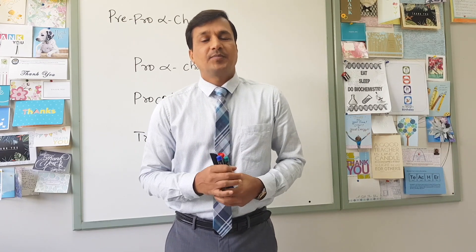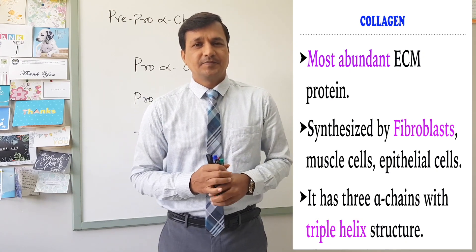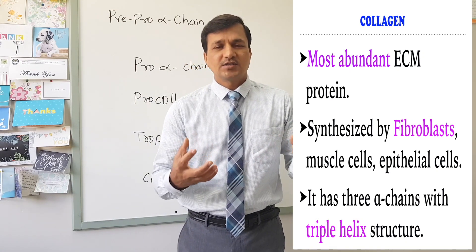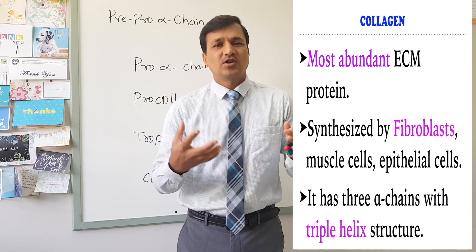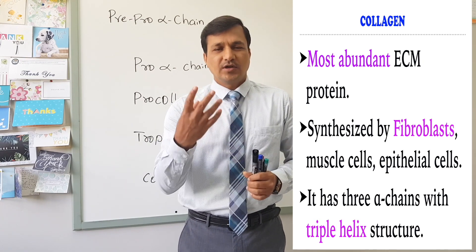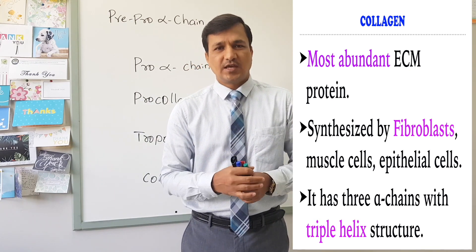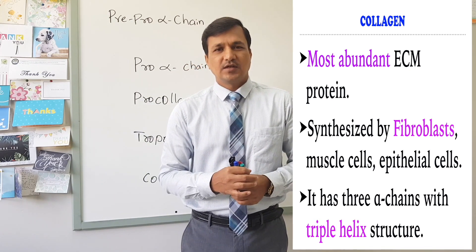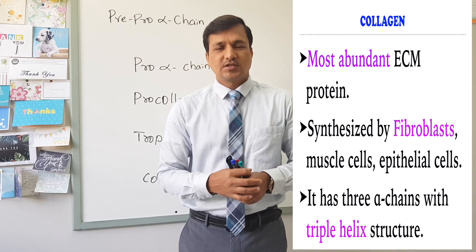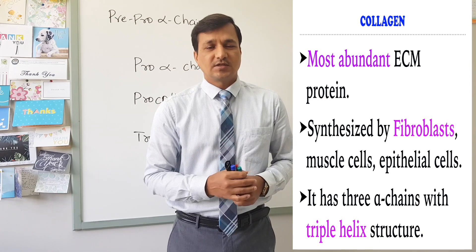Even muscle cells and epithelial cells can synthesize the collagen molecule. This collagen molecule is a long rigid structure which has three alpha chains — three polypeptide chains referred to as alpha chains — and these three alpha chains interwind with each other to make a rope-like structure called the collagen molecule.